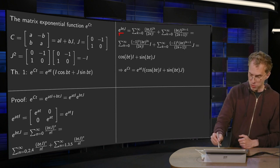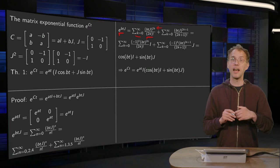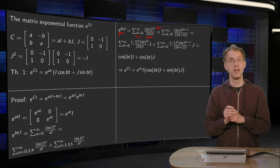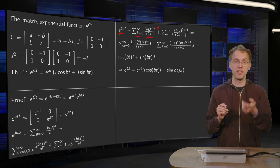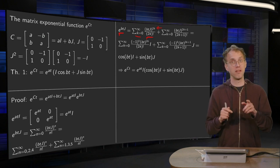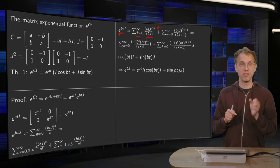So put n equals 2k here and here, and then our k runs from 0 to infinity. And similarly for the second sum, we set n equals 2k plus 1, because then we can again run k from 0 up to infinity. Because if we set n equals 2k plus 1, then for k equals 0 we get 1, for k equals 1 we get 3.